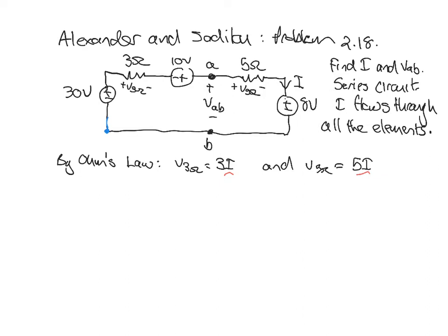We write down the sign we get to first. By Kirchhoff's voltage law, we get minus 30 volts, plus 3I (the voltage drop across the 3 ohm resistor), minus 10 volts, plus 5I